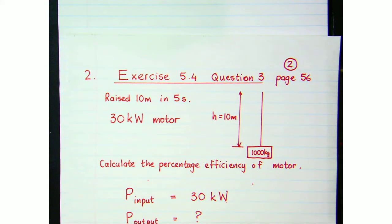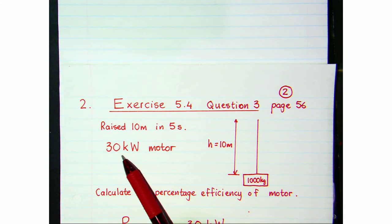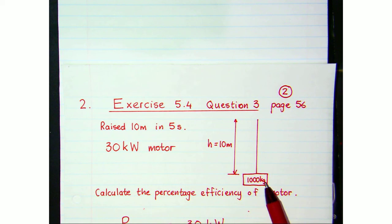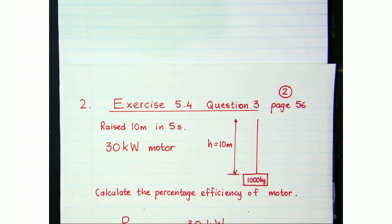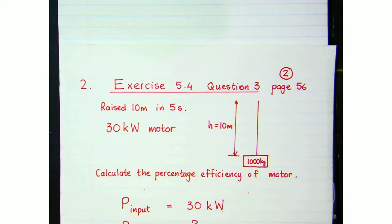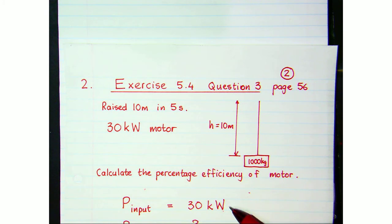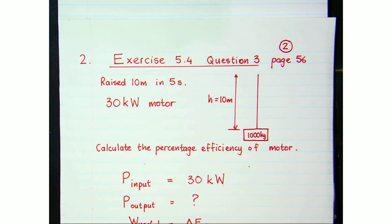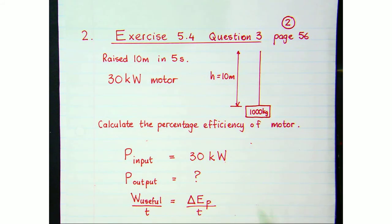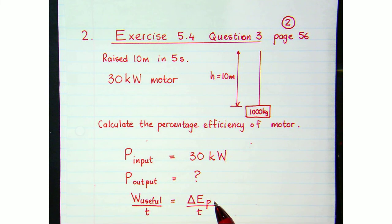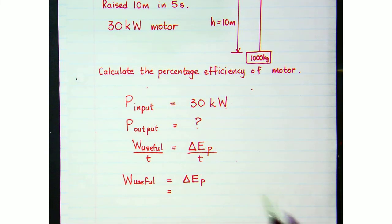We've got this motor rated at 30 kilowatts working at full power, used to raise a 1,000 kilogram block through a vertical height of 10 meters in five seconds. To find the percentage efficiency, the input power is 30,000 watts. We need to find the output power — how much useful work it's doing per second. Useful work equals the change in mechanical energy, which in this case is a change in potential energy.